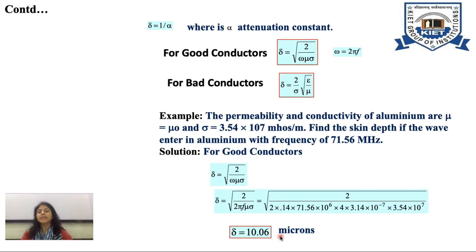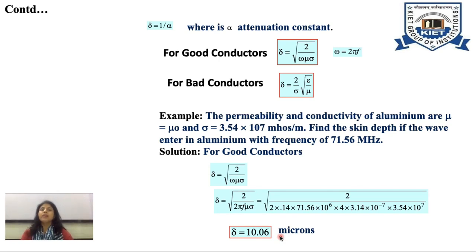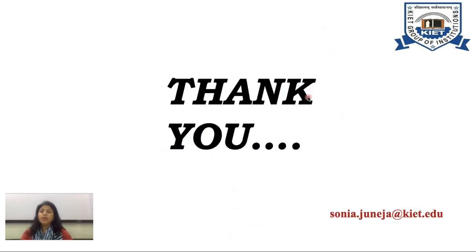In summary, skin depth is the distance at which the electric field strength reduces to 1/e times its initial value. It is the reciprocal of the attenuation constant. For good conductors delta equals square root of 2 over omega mu sigma, and for bad conductors delta equals (2/sigma) times square root of epsilon over mu. Thank you. For any query, kindly contact me at sonia.juneja at kite.edu.